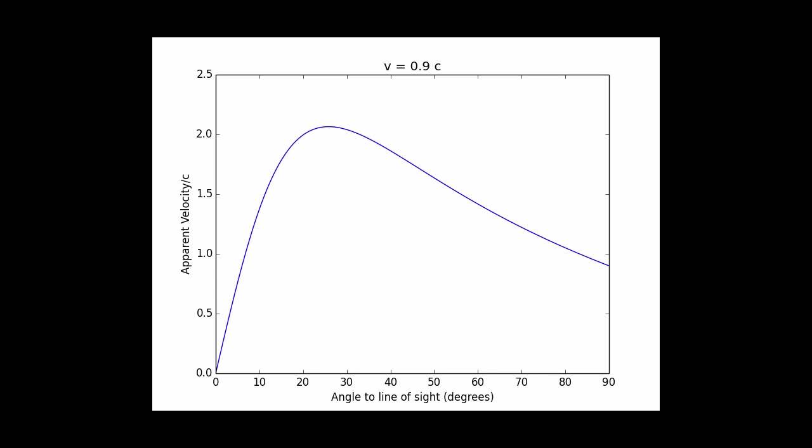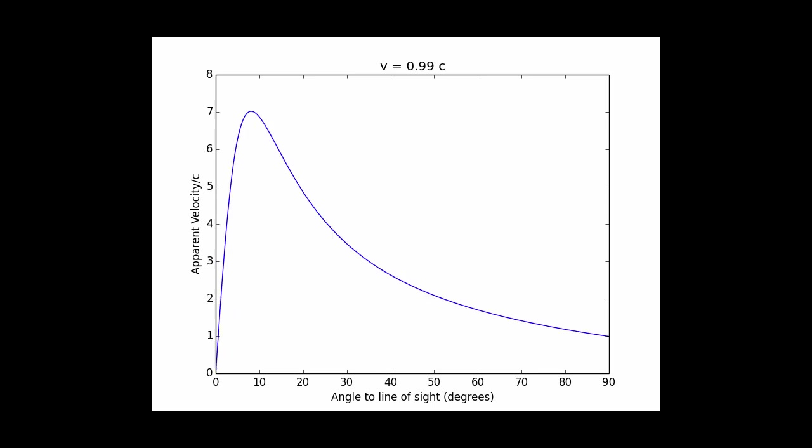A speed of 0.7c wasn't enough to give us apparent superluminal motion, but here's the plot for 0.9c, and you can see now that at angles of between 20 and 30 degrees from the line of sight, the apparent velocity can be up to twice the speed of light, so we are getting superluminal motion. If we take the velocity even further still, all the way up to 0.99% of the speed of light, you can see that you can get extremely fast speeds, up to seven times the apparent speed of light for angles that are only about 10 degrees off the line of sight.